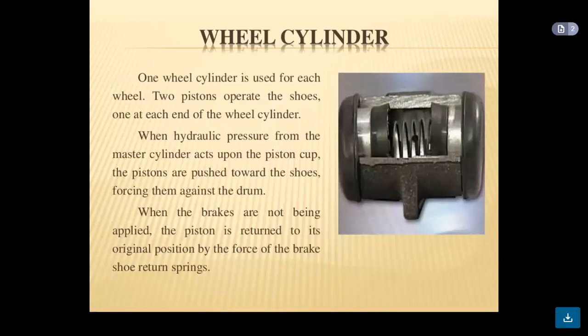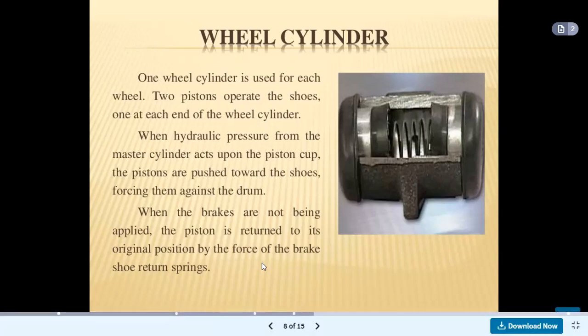The next important component is the wheel cylinder. One wheel cylinder is used for each wheel, with two pistons operating the shoes — one at each end of the wheel cylinder. When hydraulic pressure from the master cylinder acts upon the piston cup, the pistons are pushed towards the shoes, forcing them against the drum. When the brakes are not applied, the pistons are returned to their original position by the brake shoe return springs.